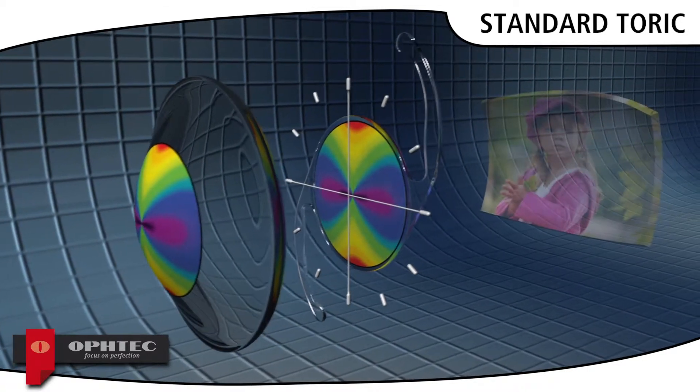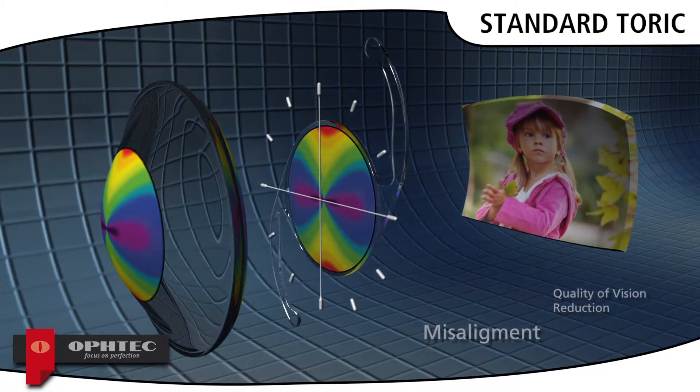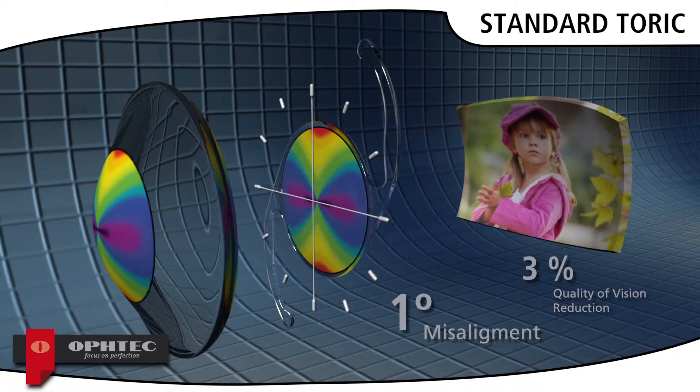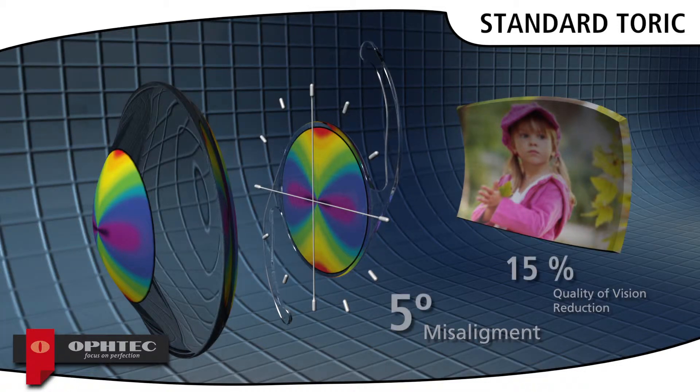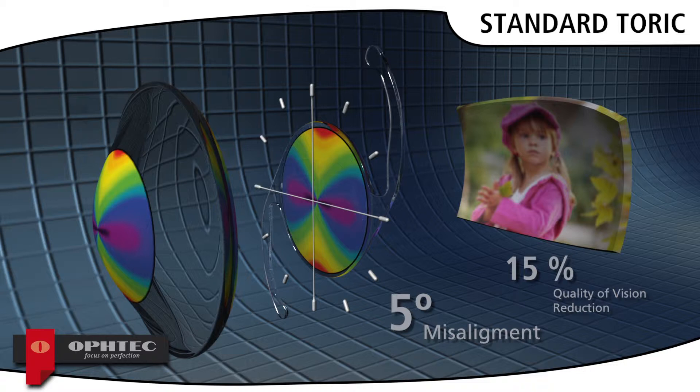Effect of Rotation or Misalignment: For one degree of rotation, quality reduces by 3%. That is, quality of vision would be affected by about 15% if the lens is misaligned by 5 degrees.